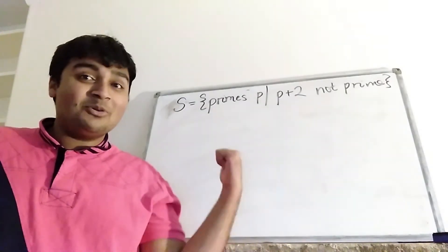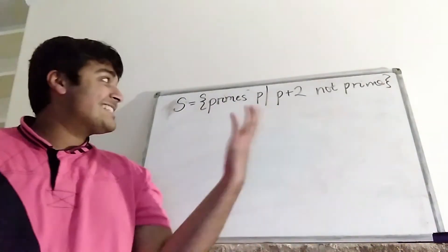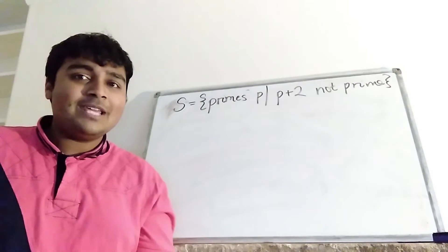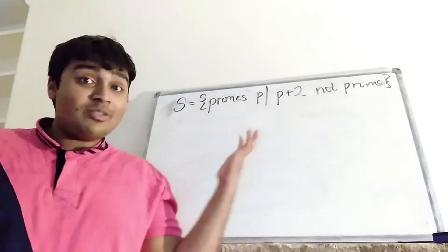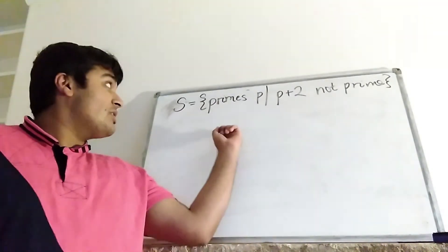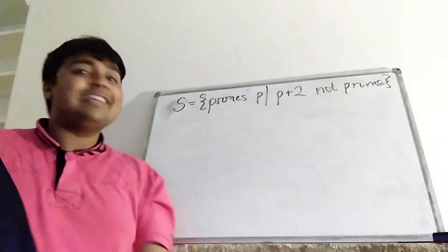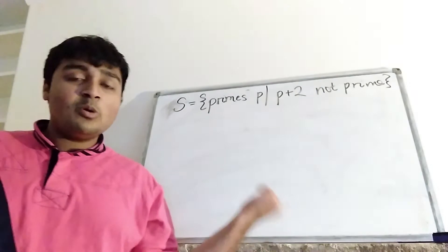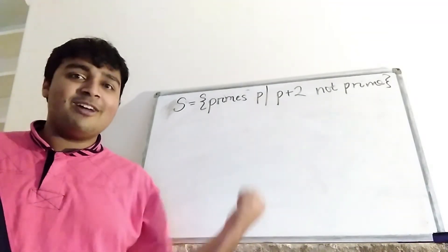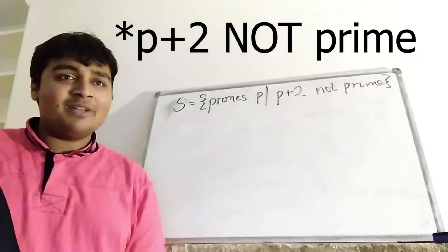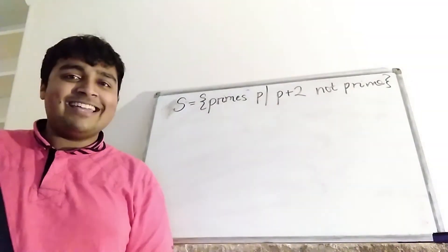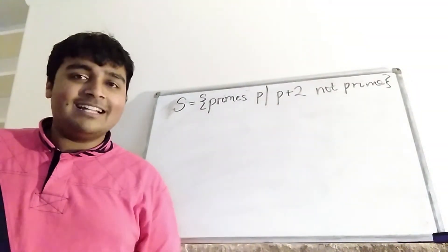Okay, so I've written this set up on the board S, and I've defined it as follows. It's a set of primes p, for which p plus 2 is not prime. So the problem we're trying to solve is equivalent to showing that S has infinite cardinality. In other words, there are infinitely many elements in this set. Because remember, what we want to do is show that there are infinitely many primes p, for which p plus 2 is prime. And of course, that is the same thing as saying that this set here has infinite cardinality.